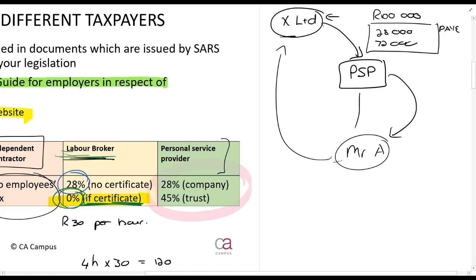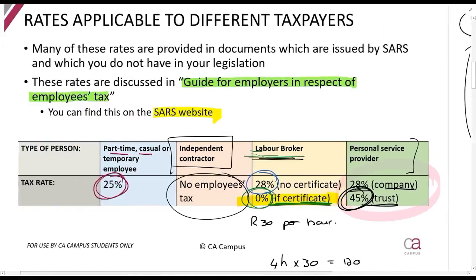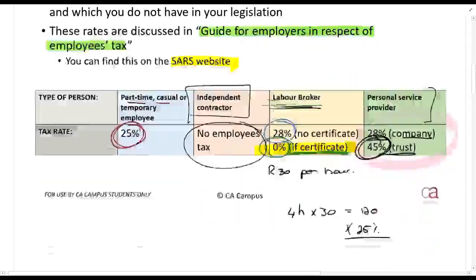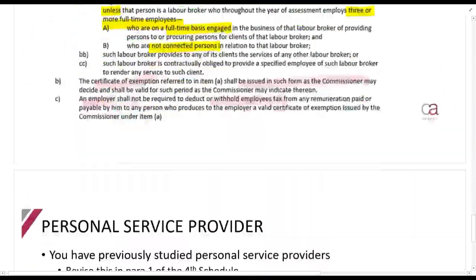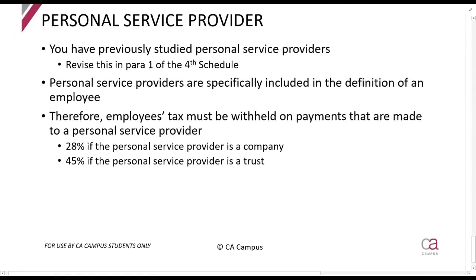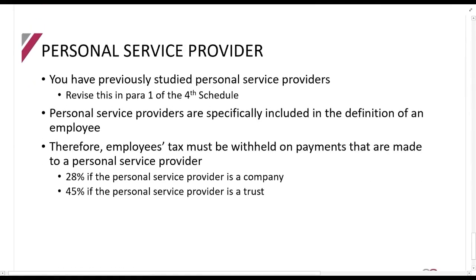The rate is 28% if the personal service provider is a company, and 45% if the personal service provider is a trust — so it would be R45,000 withheld in that case. Personal service providers will also have employees tax applied in this way, just as we discussed.